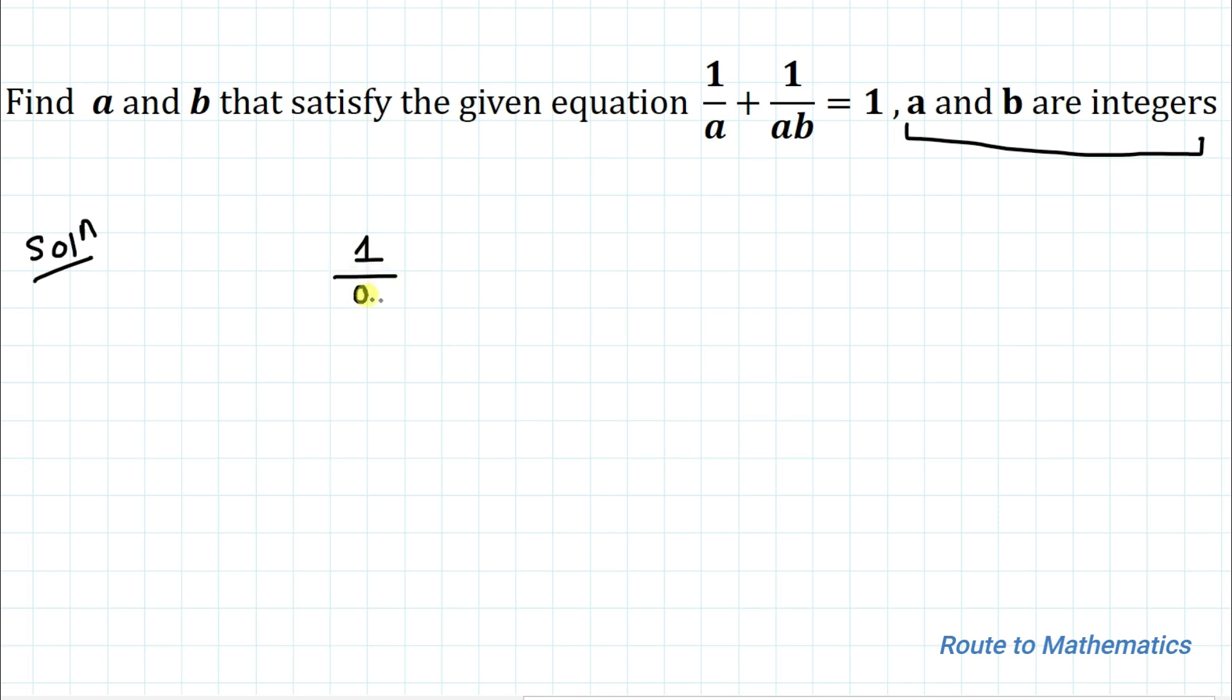So we have given 1/a + 1/ab = 1. So let's take it as equation 1. In order to satisfy the given condition, one thing you can notice that 1/a + 1/ab = 1, this means a must not be equal to 0 and b also not equal to 0. If a and b is equal to 0 the answer must be undefined.